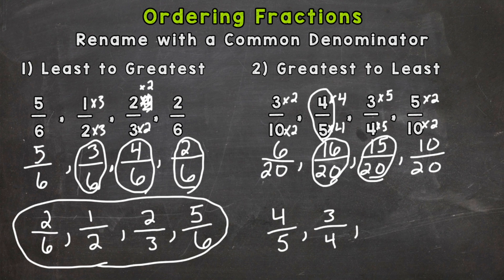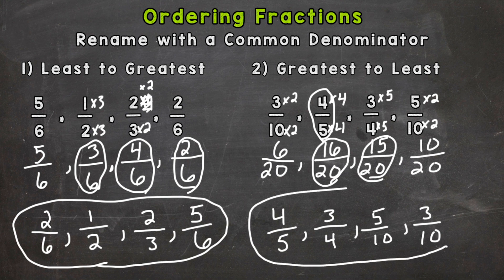Then 10 twentieths, which is 5 tenths in the original list. And lastly, 6 twentieths, which is 3 tenths. And there's our order from greatest to least.